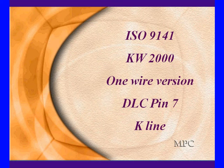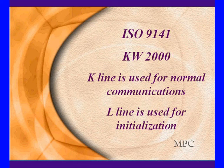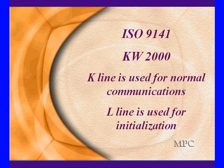In the one-wire version we only have pin 7 used — it's the K line. In the two-wire version we also have an L line. The K line is used for normal communications, and in the one-wire system it's also used for initialization — the start of communications. In the two-wire system, the L line is used for the start of communications.